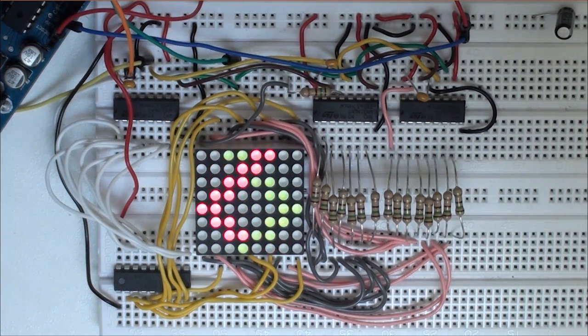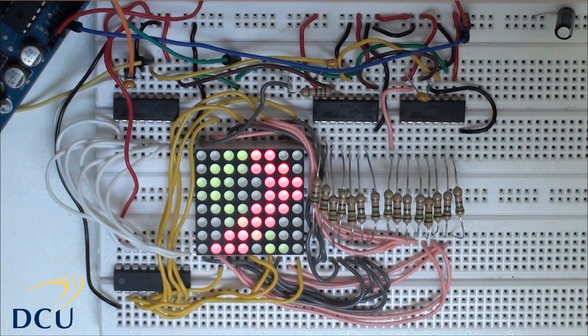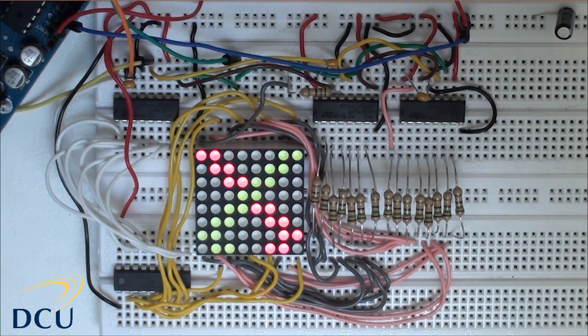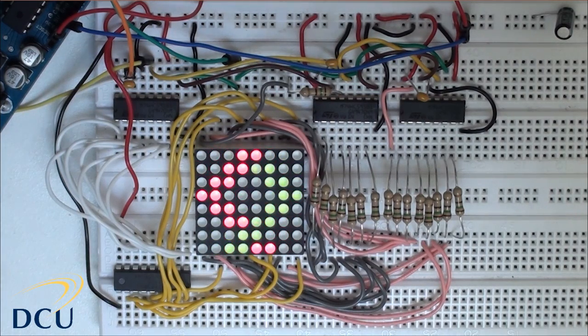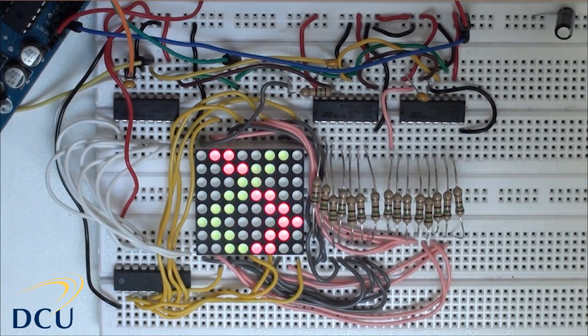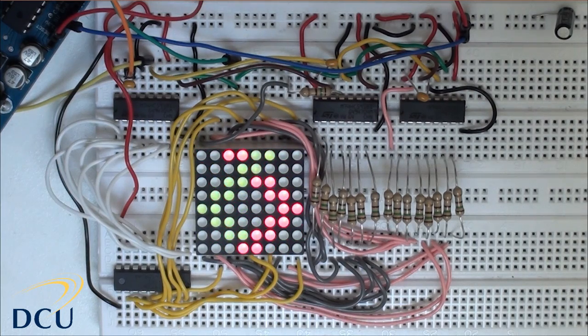In this video I am using a common anode dot matrix display, so please check that yours is the same before you wire it exactly as I have done in the circuit. There are some previous videos on the 74HC595 serial to parallel converters and also an introduction to dot matrix displays, so please watch them first.